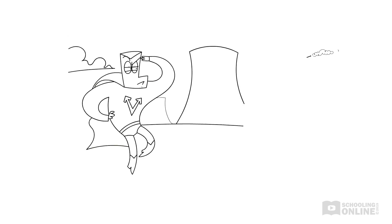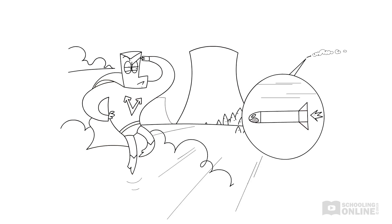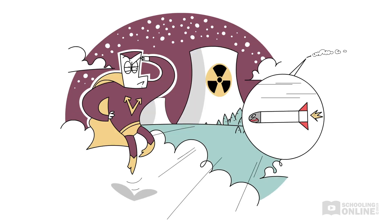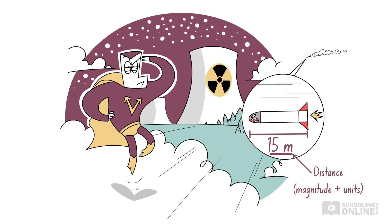Above the clouds, Vector Man spots the missile heading straight for the city's nuclear reactor. It'll pack a punch — it's 15 metres long. This is also a scalar, since it has a magnitude of 15 and units of metres. In general, the length of an object is a scalar quantity.